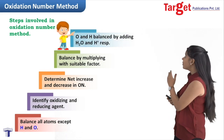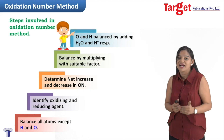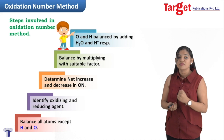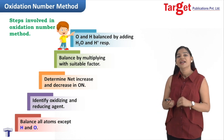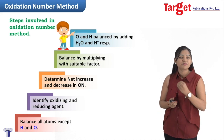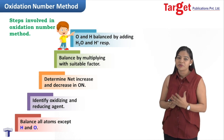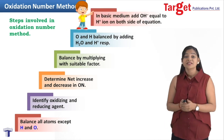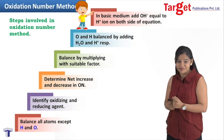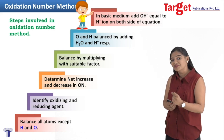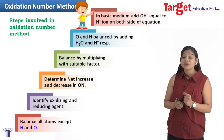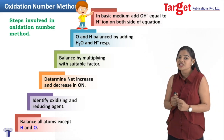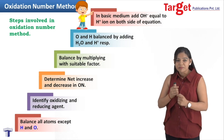The next step is to balance the remaining oxygen and hydrogen atoms. Oxygen is balanced by adding water molecules, and hydrogen is balanced by adding H⁺ ions on the opposite side. The last step is specifically for basic medium — if the reaction is in basic medium, we add an equal number of OH⁻ ions as the H⁺ ions obtained in the previous step.